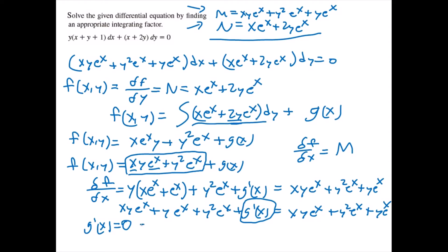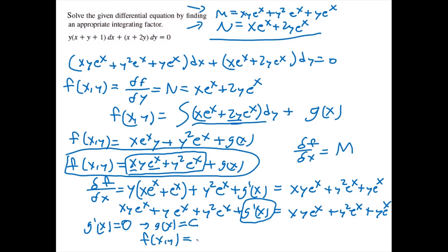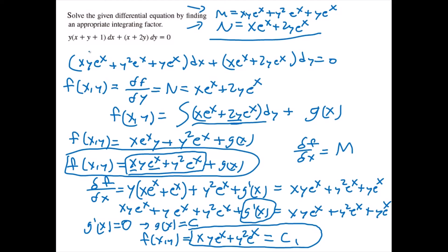Since g'(x) equals zero, g(x) is simply a constant. Therefore, the solution for our equation is xye^x plus y²e^x equals a constant c₁. This is the solution to the differential equation using an appropriate integrating factor.